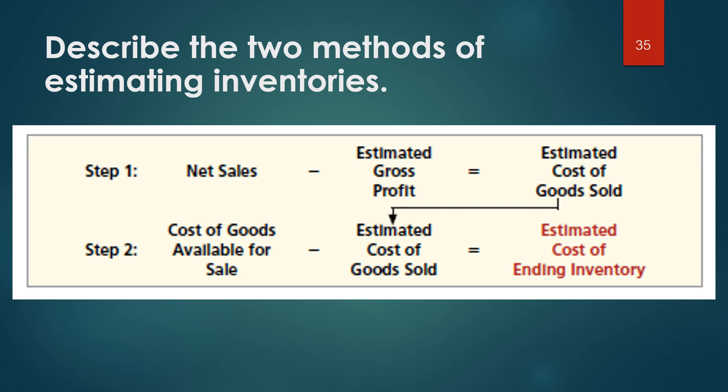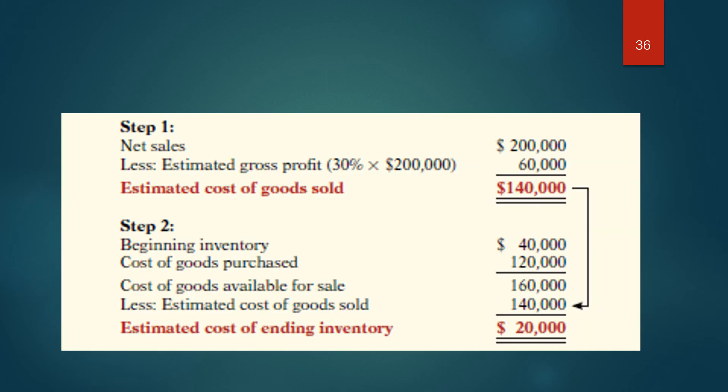To use the gross profit method, a company needs its net sales, cost of goods available for sale, and gross profit rate, then can estimate gross profit for the period. Kishwaukee Company's records show net sales of $200,000, beginning inventory of $40,000, and cost of goods purchased of $120,000. With the same 30% gross profit rate expected this year, Kishwaukee can compute the estimated cost of ending inventory at January 31 under the gross profit method.